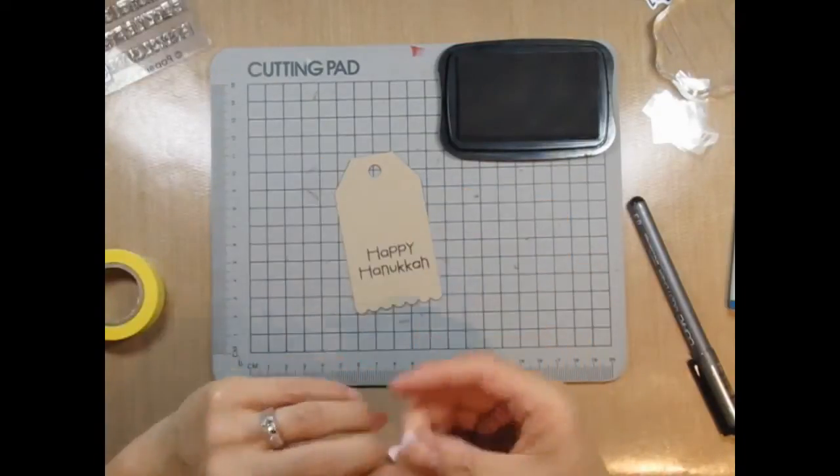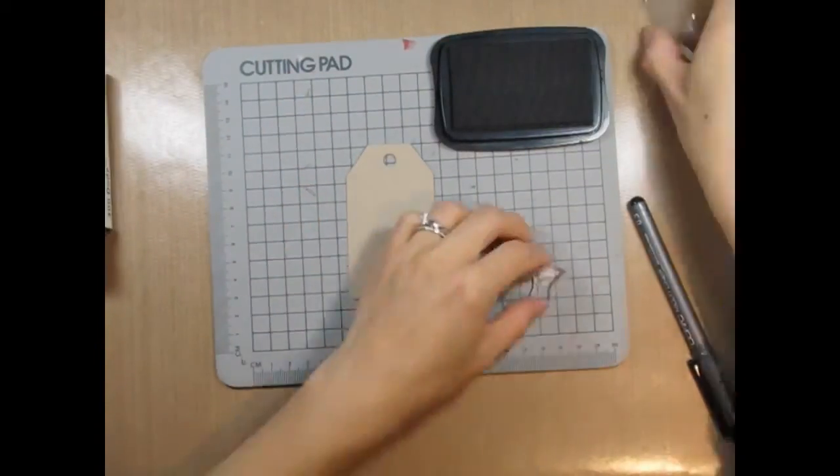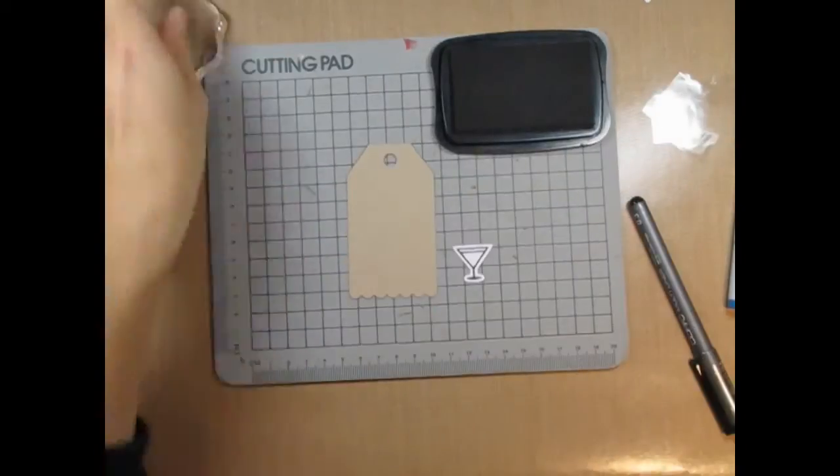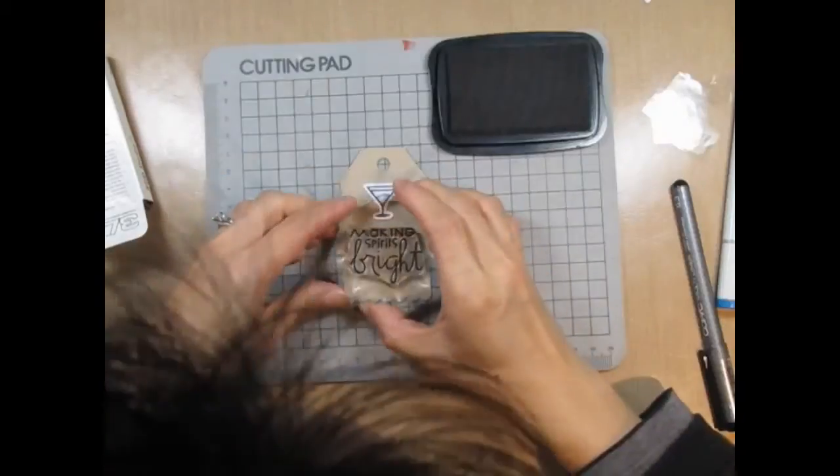And there I am using the Copic pen to make a correction. Since I used the martini glass on the shopping bag I had to create a second one and I just made a tag using the same image and sentiment that is on the shopping bag die.